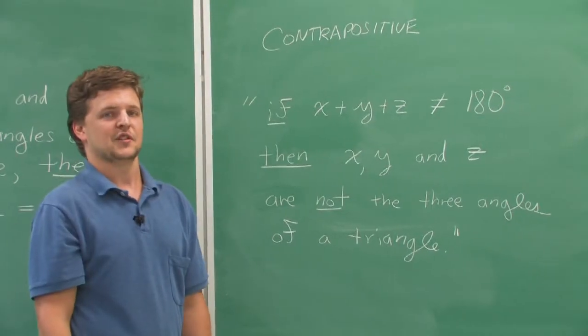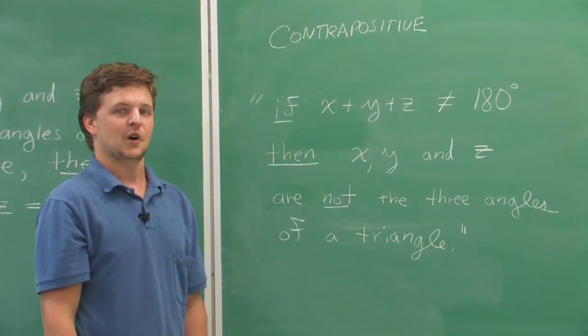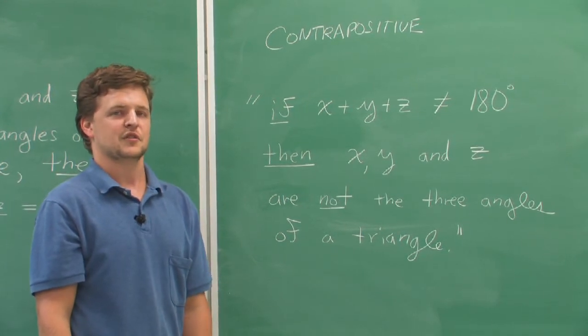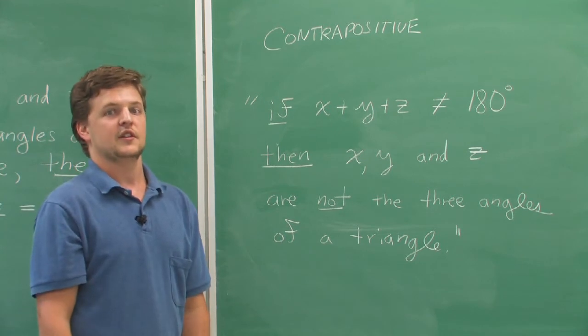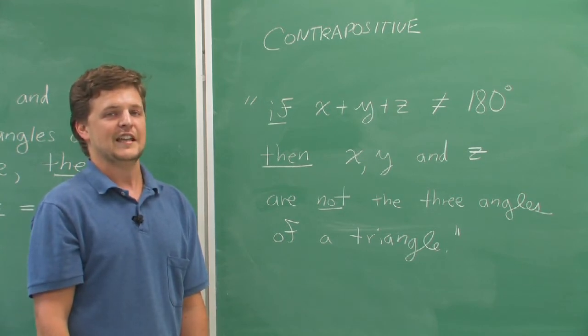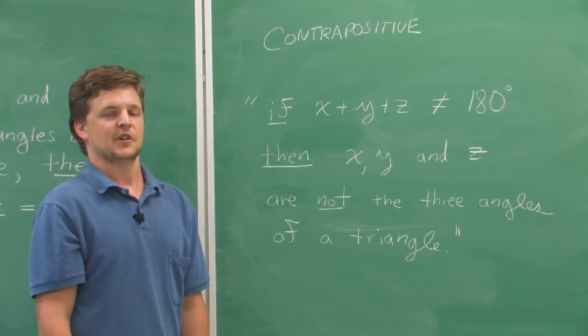To get the contrapositive you do two things. One, you reverse the order of the original statement. You switch the if portion and the then portion. Second, you also have to negate each of those original parts.